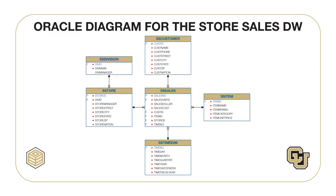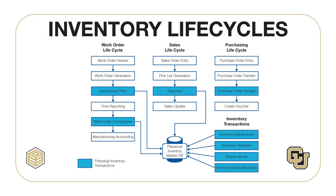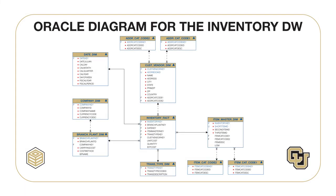The Inventory Data Warehouse supports business intelligence about inventory cycles. Inventory — bought, sold, consumed, and produced — is the heart of any manufacturing or distribution company. Inventory transactions are frequent and common, and their volume and significance makes them important in a data warehouse design. The work order, sales, and purchase life cycles affect the perpetual inventory balance, as shown in this diagram. In addition, inventory transactions including adjustments, transfers, issues, and reclassifications affect the perpetual inventory balance. You will use the Inventory Data Warehouse for assignments in Modules 2, 3, and 4. If you completed the assignment in Module 5 of Course 2, you should already be familiar with the Inventory Data Warehouse.